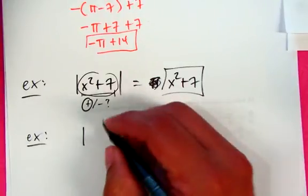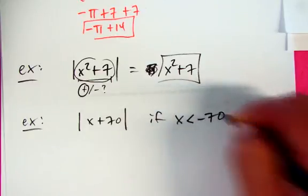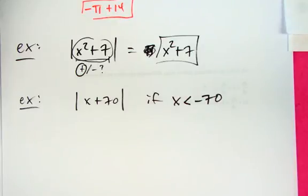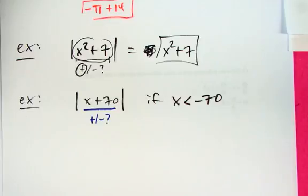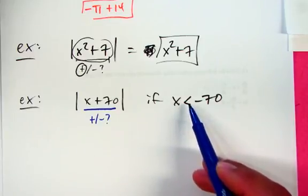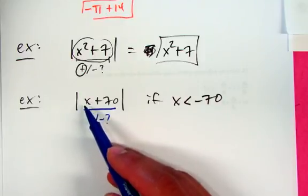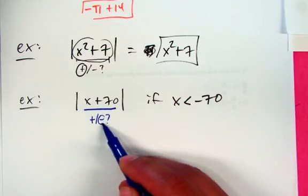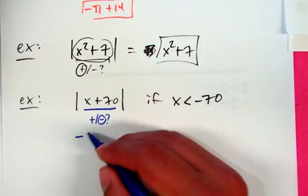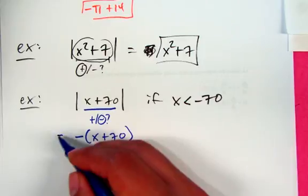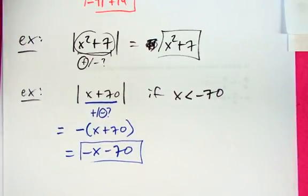Here's another quick example. Let's say we have the absolute value of x plus 70, and we're told that x is less than negative 70. So, x plus 70 — is it positive or negative? Since x is smaller than negative 70, we're talking about numbers like negative 71, negative 72, anything smaller. If I add 70, the result is always negative. Since it's always negative, the definition says we do the opposite of what is inside the absolute value. Distribute the negative — and there's our answer.